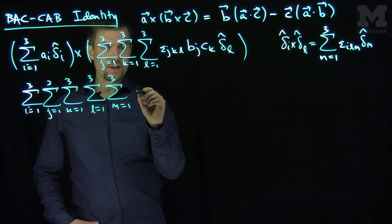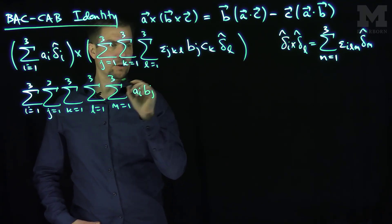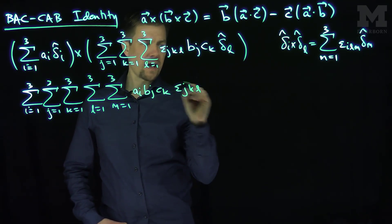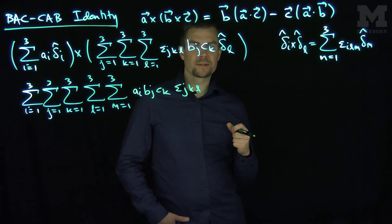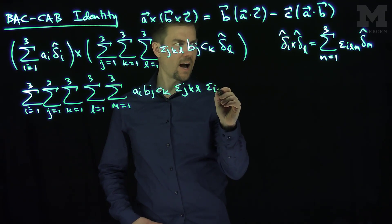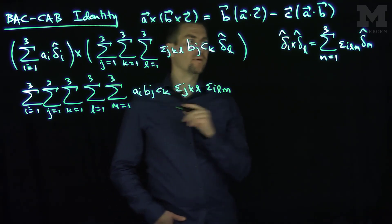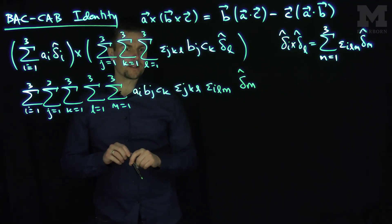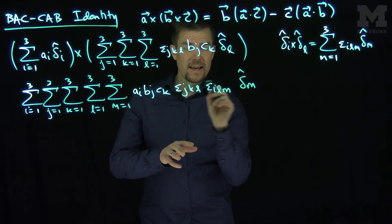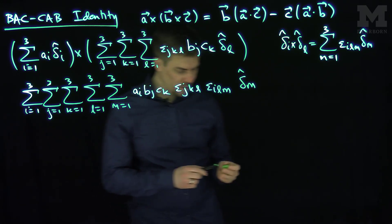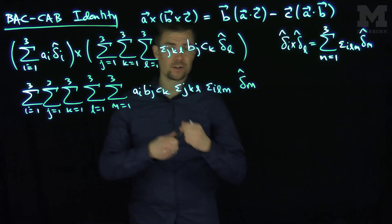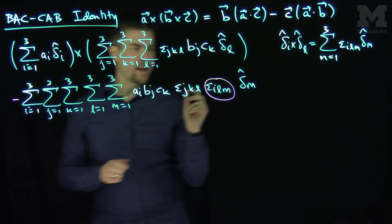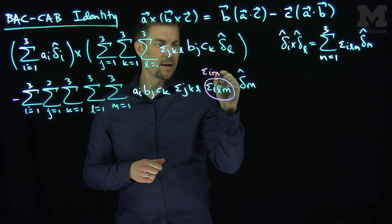In sequence, the full expression has: a_i, then b_j, then c_k, then epsilon-jkl, then epsilon-ilm, then delta-m hat. Now we can use the match-mismatch identity, but I need the l index in the correct position. So we flip two indices in the permutation symbol, which gives a sign change: epsilon-ilm becomes negative epsilon-iml.